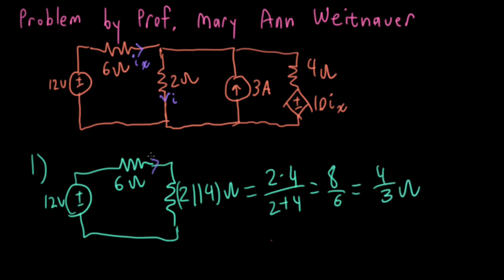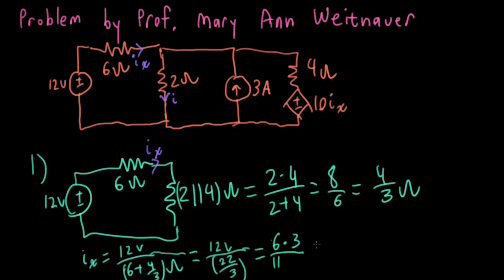So I can find the contribution to IX via Ohm's law as 12 volts divided by 6 plus 4 thirds ohm. So that's 12 volts over 22 divided by 3. I can write 12 over 22 as 6 over 11, put the 3 in the numerator, and then I get 18 over 11 amp. Now I'm going to put a little one superscript on the IX's down here to remind myself that this is the contribution to IX that's coming from the 12 volt source.